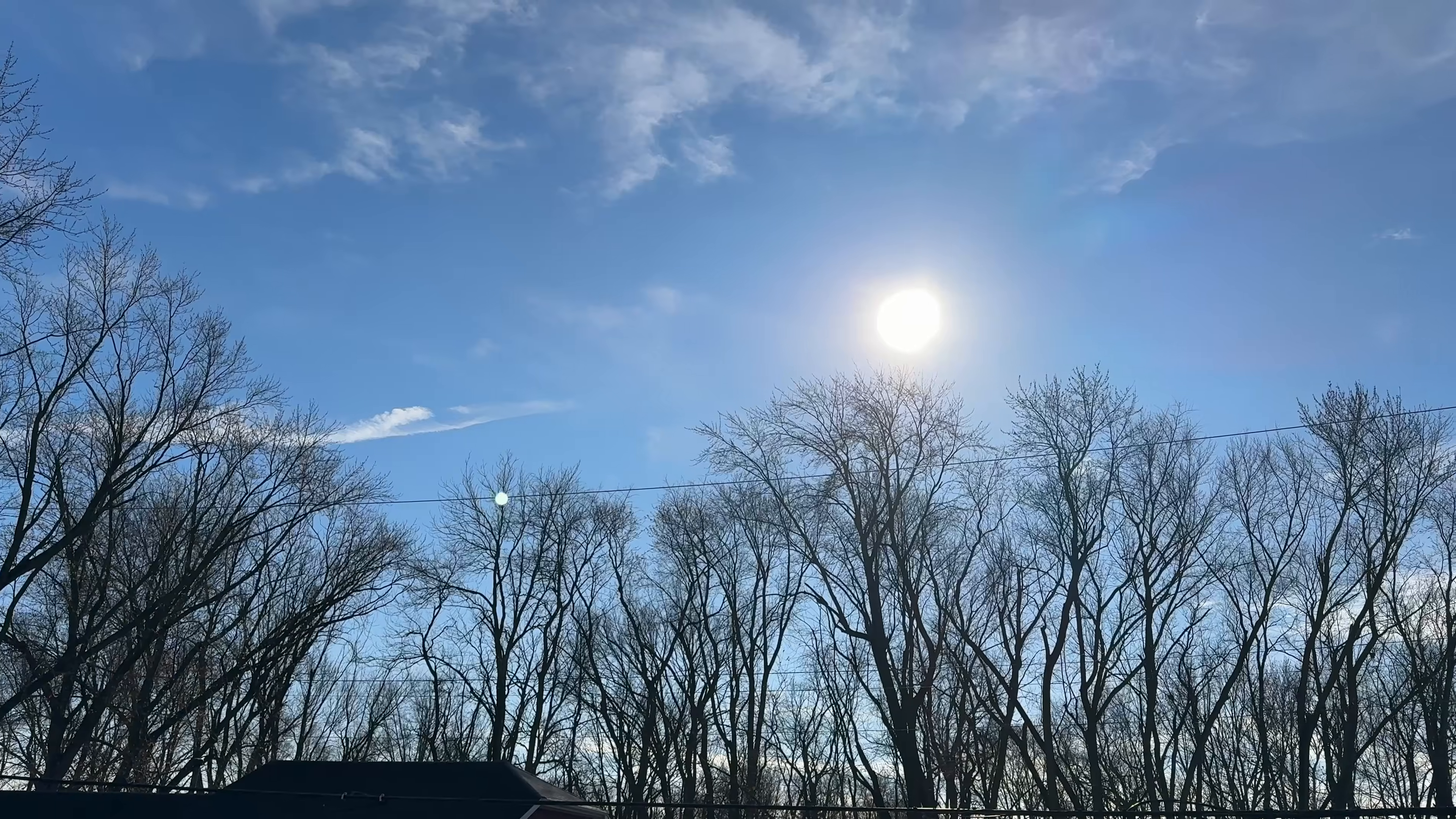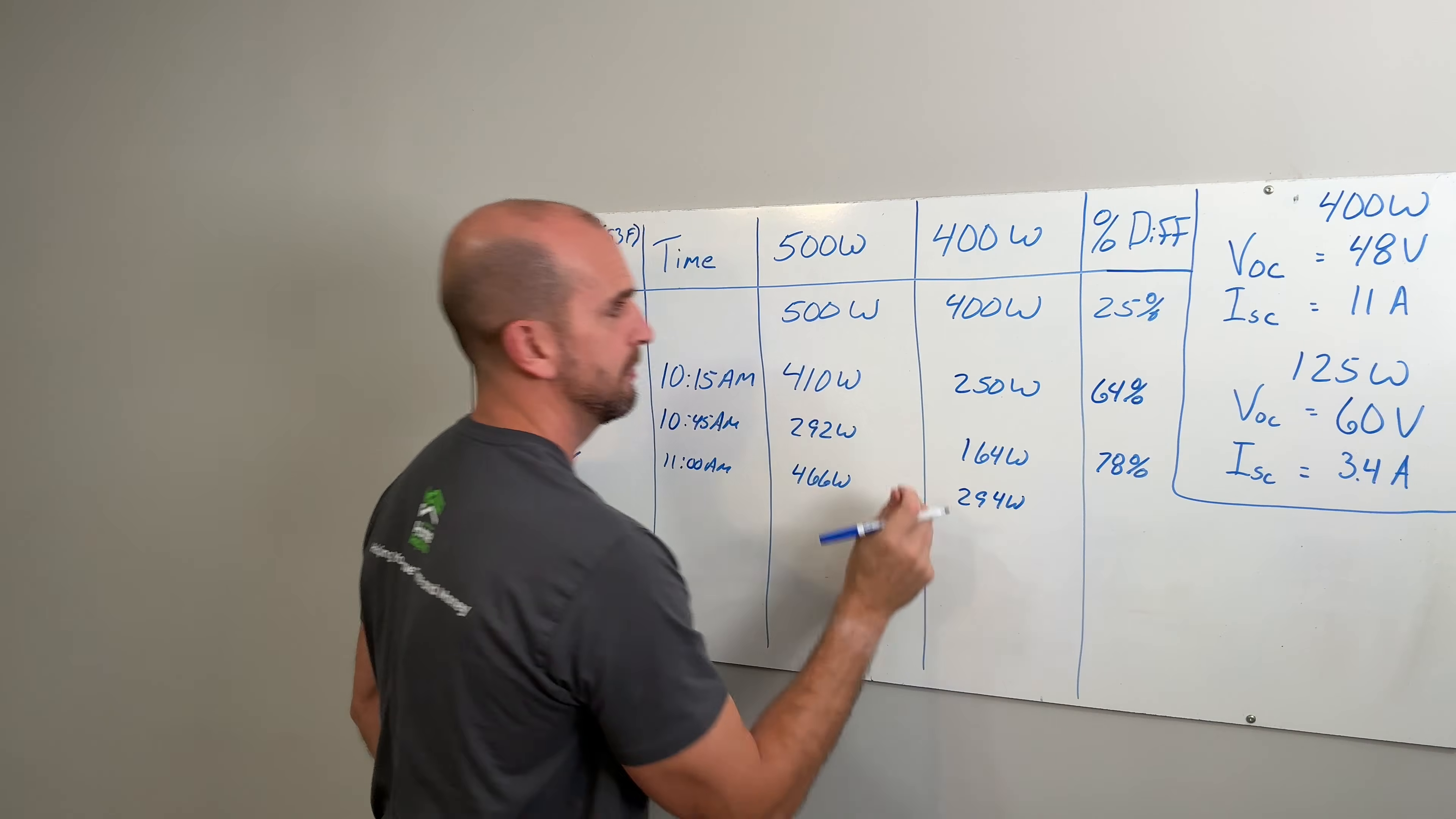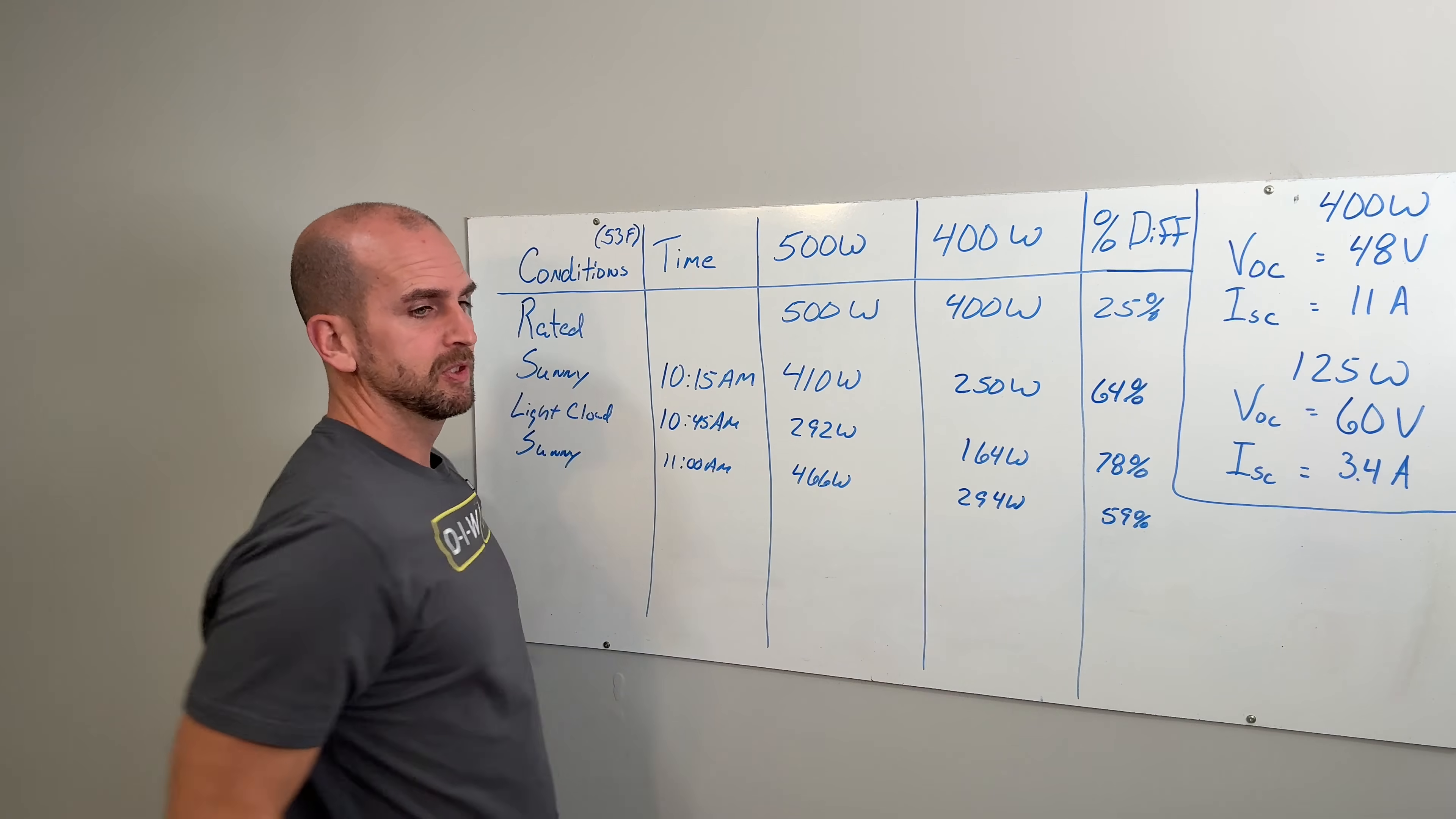Now we have another sunny scenario at 11 AM, and this is the highest power that I was able to get out of these panels today. We had 466 watts coming out of the 500 watt panels and 294 watts coming out of our 400 watt panel, resulting in 59 percent more power out of the 500 watt modular. So again we are consistently higher and consistently much higher than the rated, but that is not the biggest difference that we'll see.